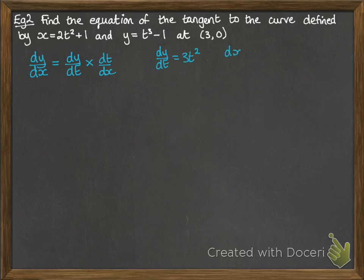So using our parametric equations, we're going to do dy by dt is 3t squared and dx by dt is 4t, so dy by dx looks like this.